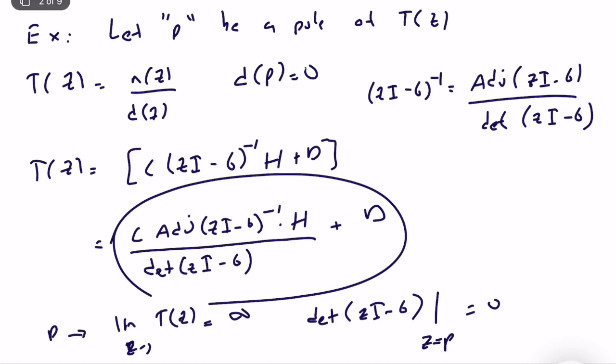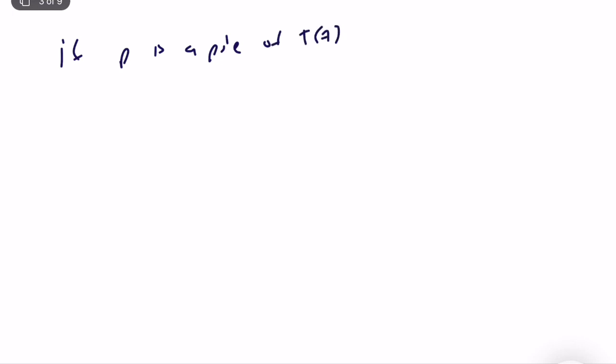The equation det(zI - G) = 0 is the characteristic equation of G. So if det(pI - G) = 0, then p is an eigenvalue of the state evolution matrix G. What we found is: if p is a pole of T(z), then p is an eigenvalue of G. This holds for all possible state-space representations giving the same transfer function.